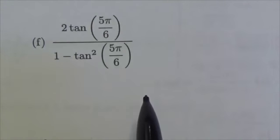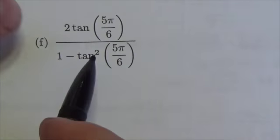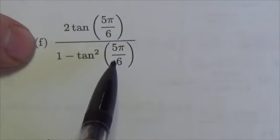What we're supposed to do is just simplify the following and realize that these are going to be sum and difference identities here. Now, you just got to look at the pattern here. 2 tangent of 5π over 6 over 1 minus tangent squared of 5π over 6.